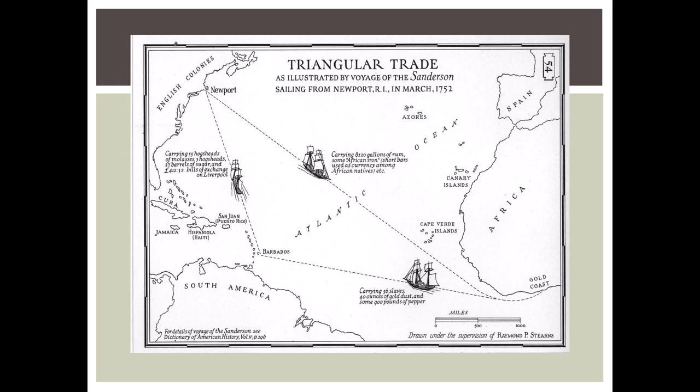There's an illustration from 1752 that explains the impression of the triangular trade: slaves go to the New World, sugar goes to the English colonies, and then rum comes back to Africa.